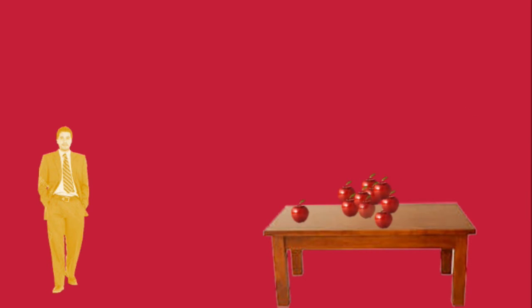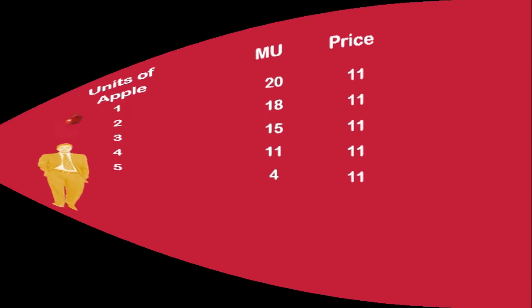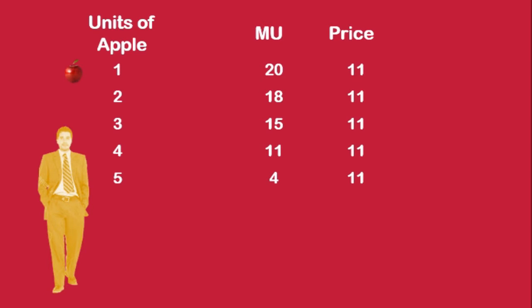Whatever be the number of apples the consumer buys, he will pay the same price, i.e. Rs. 11 for each apple. He buys the first apple and compares its marginal utility with its price. Its marginal utility is 20 units, whereas the price is Rs. 11.